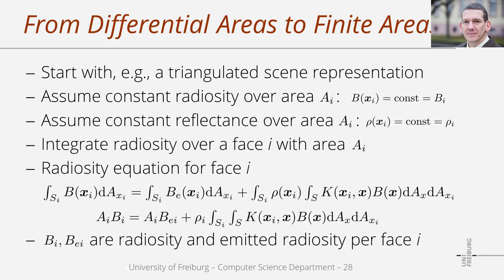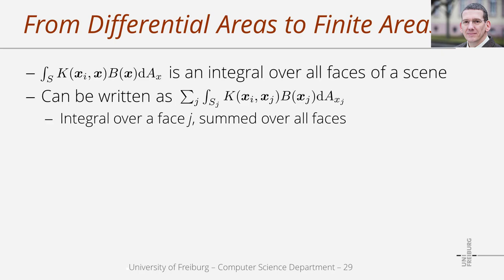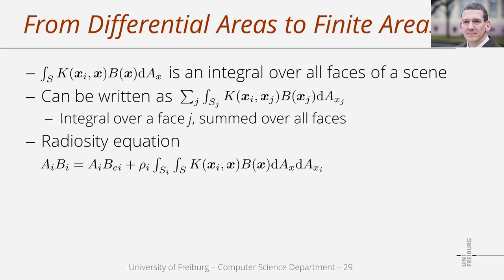The resulting equation contains quantities that depend only on patch i. However, in the integral on the right-hand side, we still have terms depending on particular positions — for instance, the kernel k depends on xi, a position within patch i, and on position x, an arbitrary scene position. The radiosity in the integral also depends on x. To remove these position dependencies, the integral over all patches is written as a sum of integrals over individual patches, integrating over positions xj of patch j and summing all integrals.